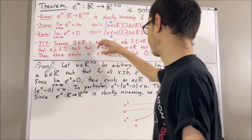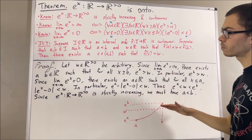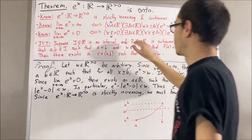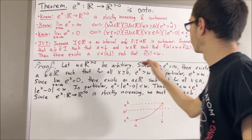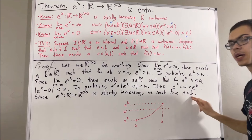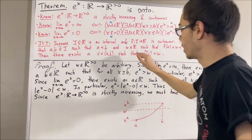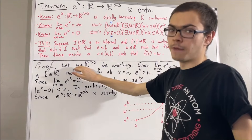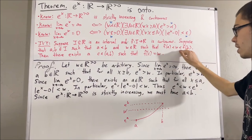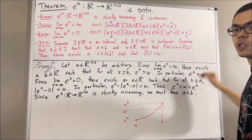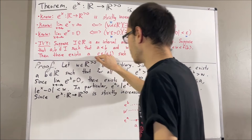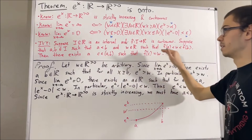We are going to apply the intermediate value theorem to the situation in our proof. In particular, let's take I to be the set of real numbers, f to be the exponential function, and a and b to be the a and b in our proof. We take w to be the w in our proof. We know that e^a < w < e^b, so by the intermediate value theorem, there exists a real number c in the open interval (a, b) such that e^c = w.